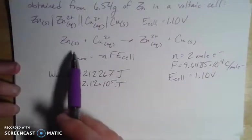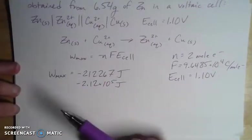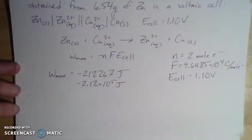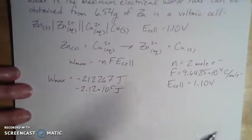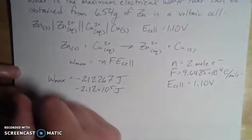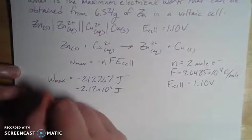All right. So that's the maximum work for this cell. That would be if I had one mole of each of these components, because that's my standard amount. That's what's true for my standard cells. This is for one mole of our reactants and products. But we don't have one mole. We have 6.54 grams of zinc. So we have to factor that in.